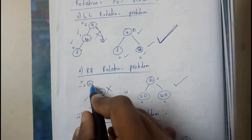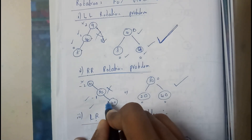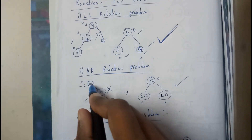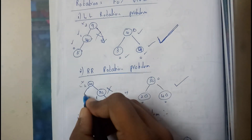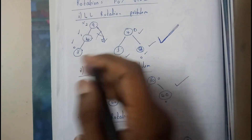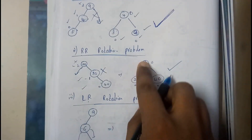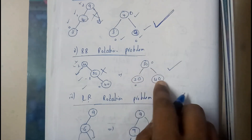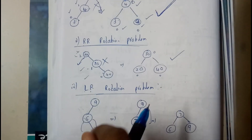In the right-right rotation problem we have a balance factor of minus two on the right side. By just rotating it — bending it like this — we get a balanced tree again, shaped like a V. This is perfectly balanced.